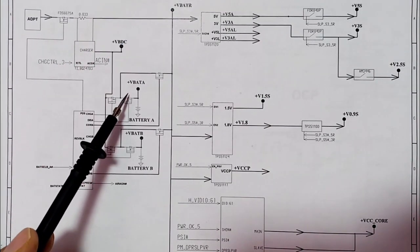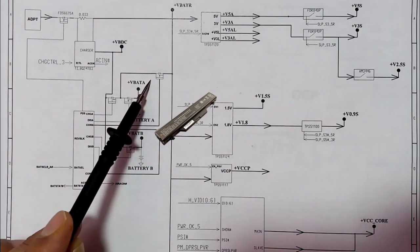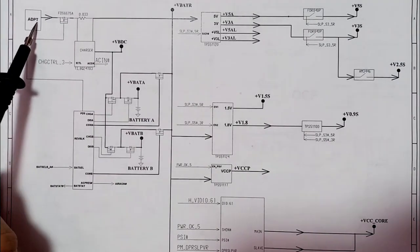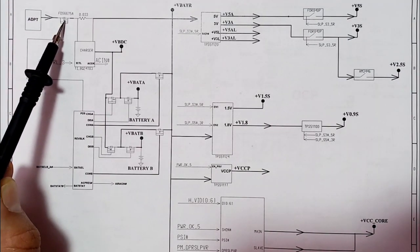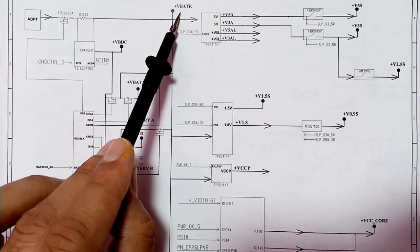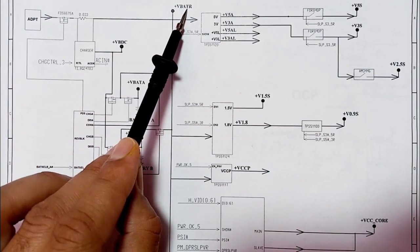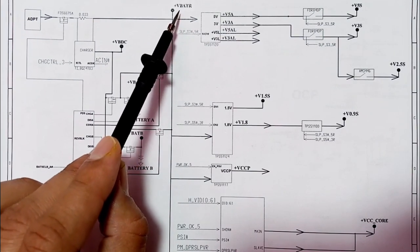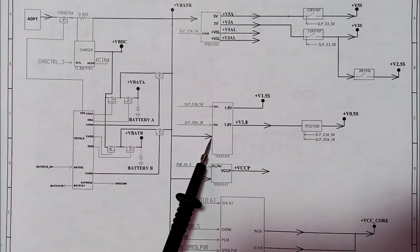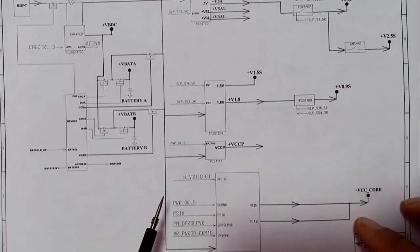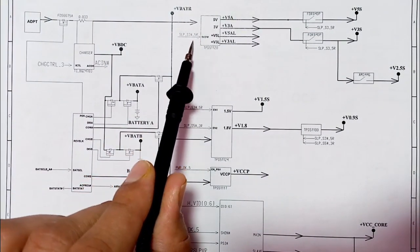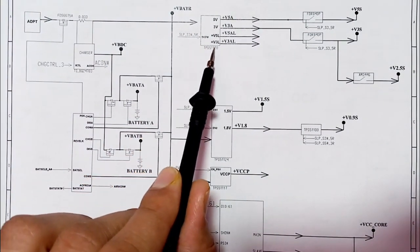This is the charge IC and here we have the battery. After the 19 volt from the adapter passes through this power switch or power MOSFET, we get plus VBAT, which is basically 19 volt. This plus VBAT will be distributed to all circuits in the motherboard, for example applied to the 3 volt and 5 volt control IC.